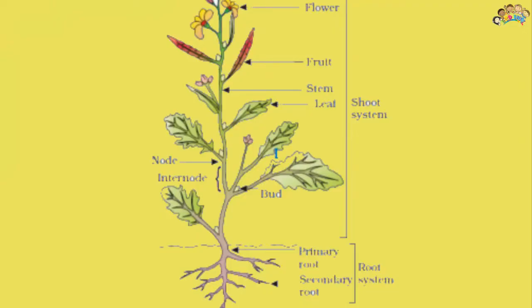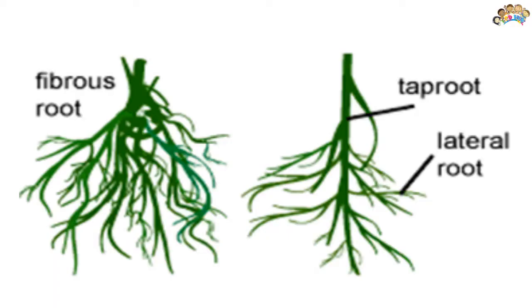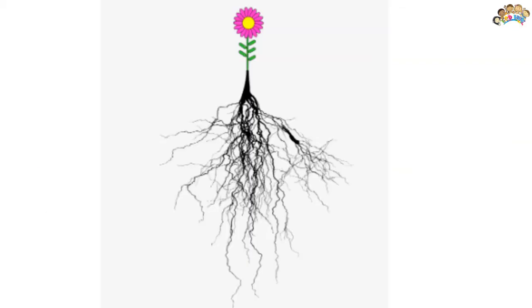Grasses and other monocotyledons — plants with a single seed leaf — have a fibrous root system, characterized by a mass of roots of about equal diameter. This network of roots does not arise as branches of the primary root, but consists of many branching roots that emerge from the base of the stem.